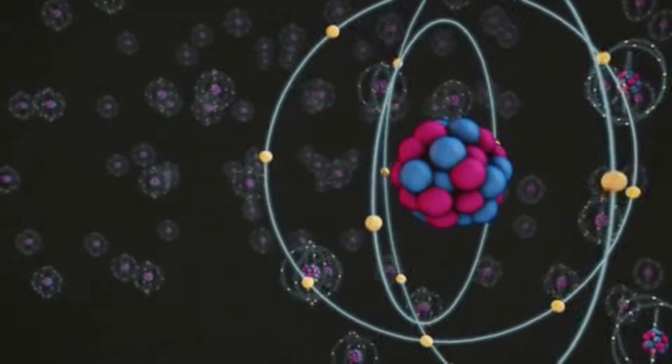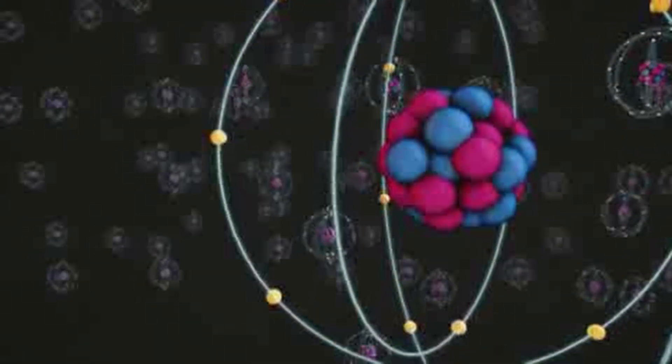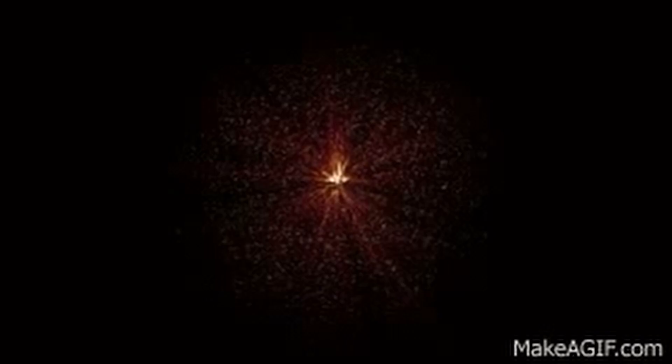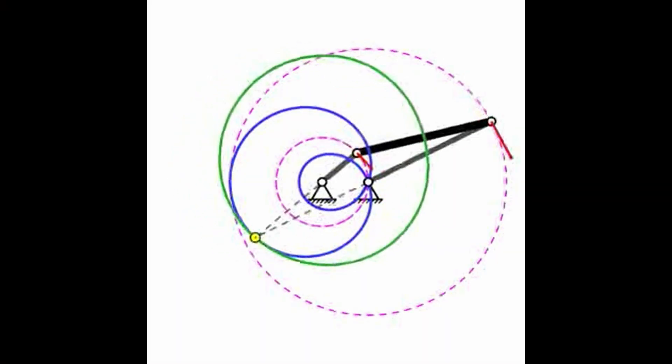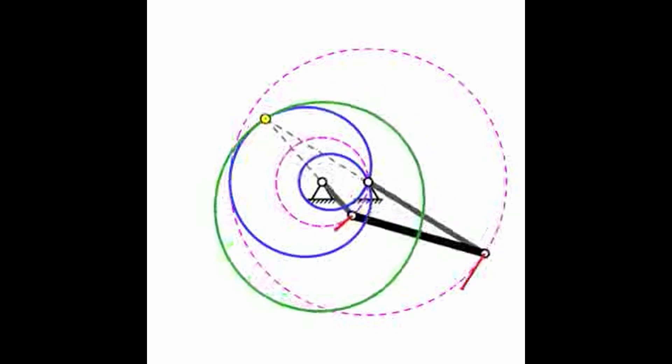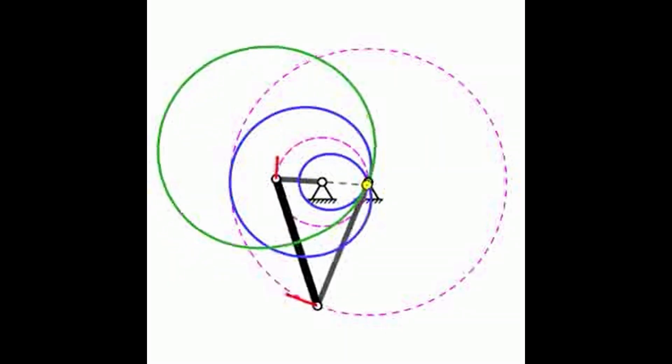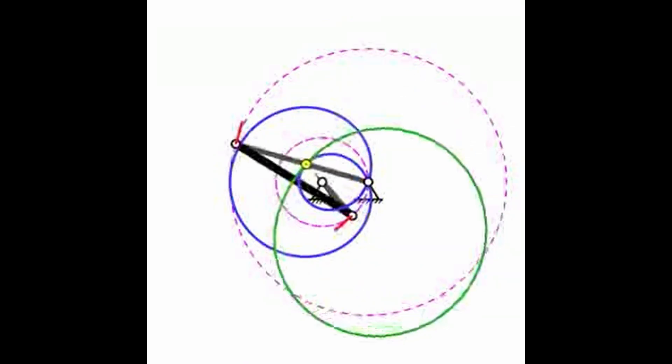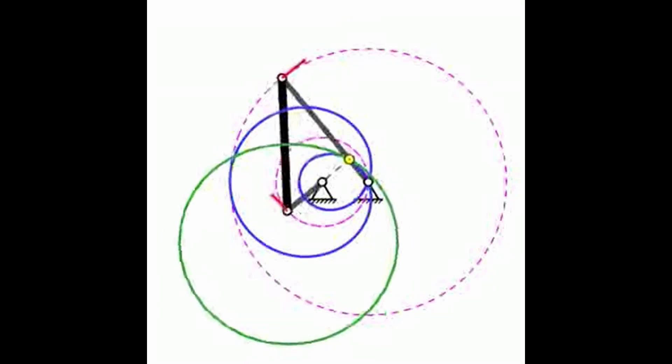The number π plays a significant role in physics due to its fundamental relationship with circles, waves, and oscillations. Circular motion and kinematics: In uniform circular motion, the angular velocity ω is defined as ω = 2πf, where f is the frequency. The linear velocity v of an object moving along a circular path is given by v = ωr, where r is the radius of the circle.